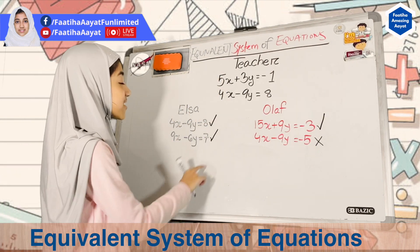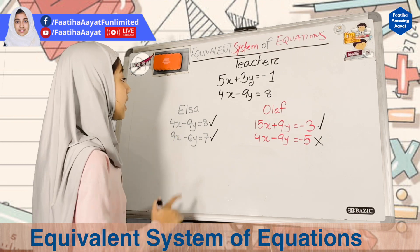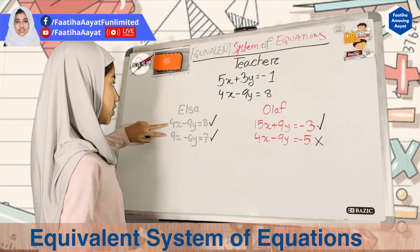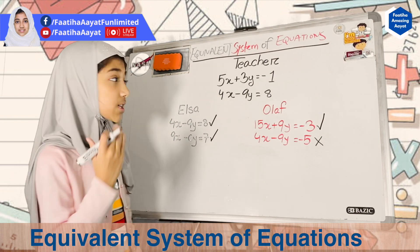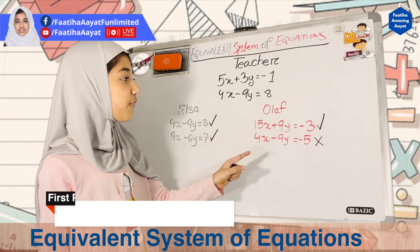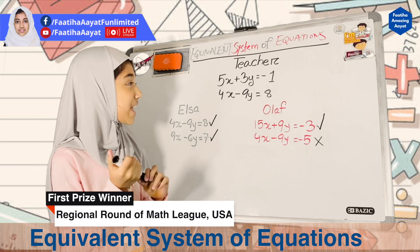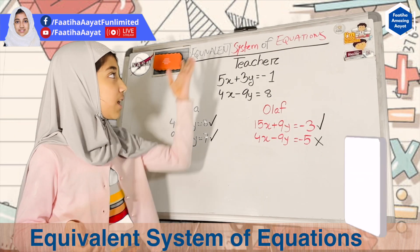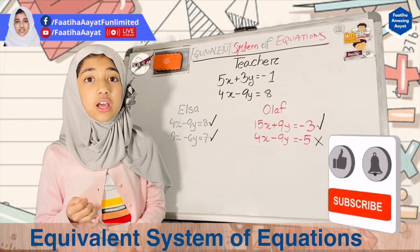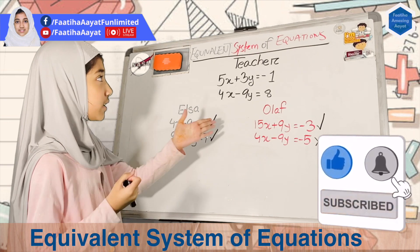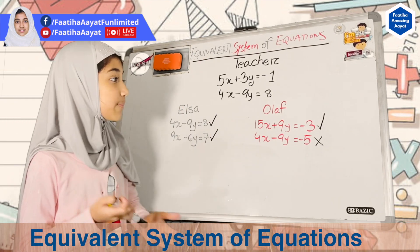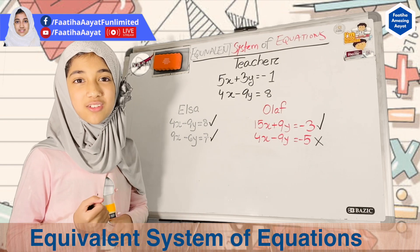That means that Elsa actually got both of the linear equations correct, and she was able to make it equivalent to the teacher's one, but Olaf was not able to. So I hope you all understood how we can figure out if they're equivalent from the systems of these equations. I hope you all enjoyed this video and I'll see you in the next video.